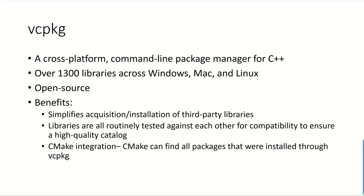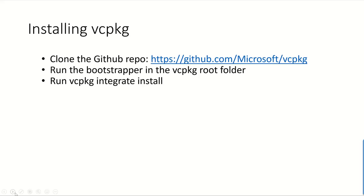vcpkg is open source and there are a bunch of benefits to using it to manage your C++ packages. First, it simplifies the acquisition and installation of third-party libraries — all you need to do is run vcpkg install and then the name of the library from the command line. The libraries are all routinely tested against each other for compatibility to ensure a high-quality catalog. You can also integrate CMake with vcpkg so that CMake can find all packages installed through that instance of vcpkg when configuring and building your project. Installing vcpkg is very simple and the same experience on Linux, Mac, and Windows — clone the GitHub repo, run the bootstrapper, and run vcpkg integrate install.